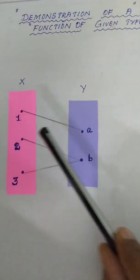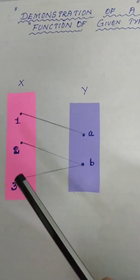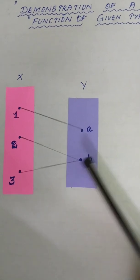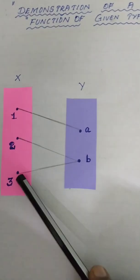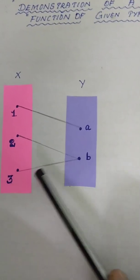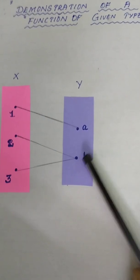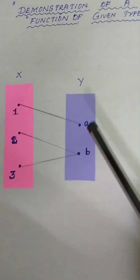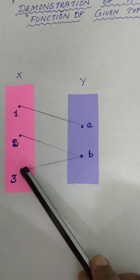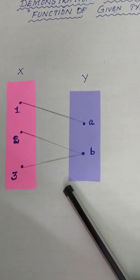1 is connected with a in the co-domain. 2 and 3 both are connected with the element b. As two elements have the same image, it is not a one-to-one function — it is a many-to-one function. Both elements of the co-domain are having a pre-image, so it is an onto function.